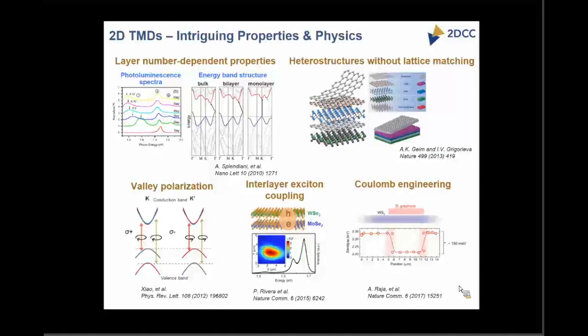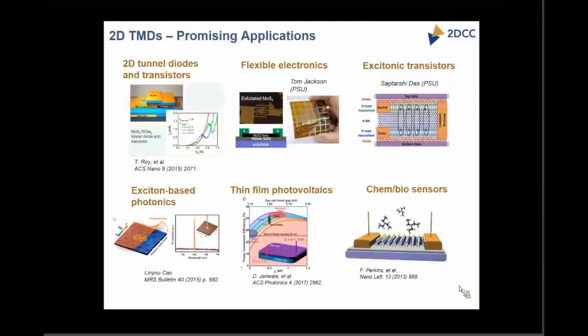Using these properties, a couple of applications have been explored: tunnel diodes and transistors, flexible electronics, excitonic transistors, photovoltaics, and chemical or biosensors. But for most of these applications, the requirement is a monolayer film, or the possibility of growing films where we can control the number of layers.